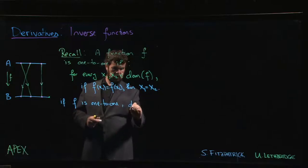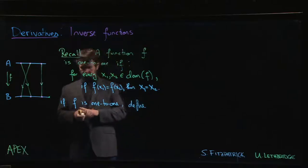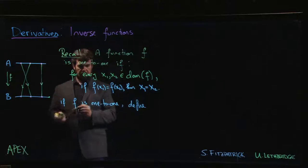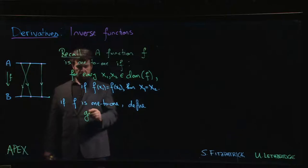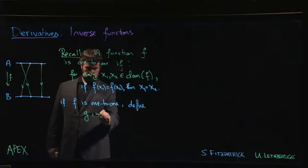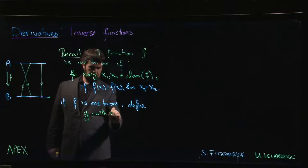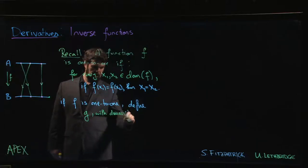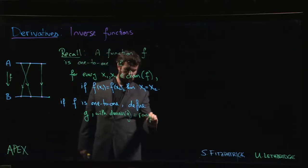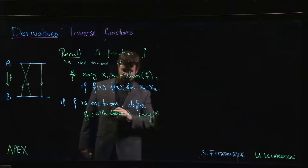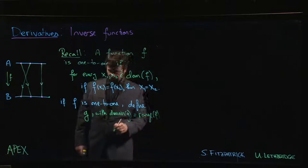We're going to define a function g. And g is going to go from—so the domain of g is going to be equal to the range of f. We just define the domain to be equal to the range of the original function.